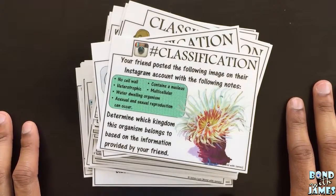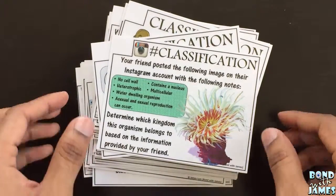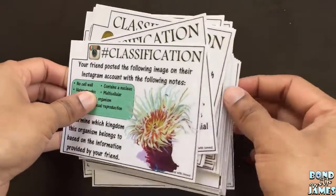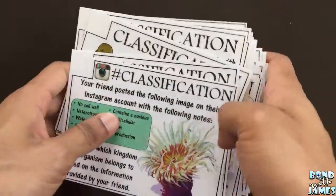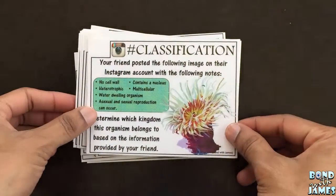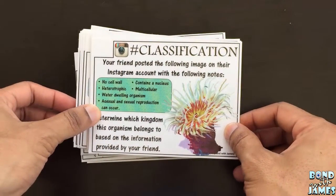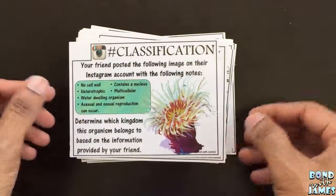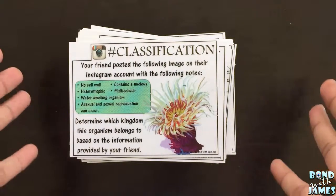Hi, this is James from Bond with James, and this is the Classification and Taxonomy Task Cards series. There are a total of 48 task cards in this set. I have printed this set out in color; however, you always have the option to print task cards in grayscale, and the cards will come out perfectly fine just as well.